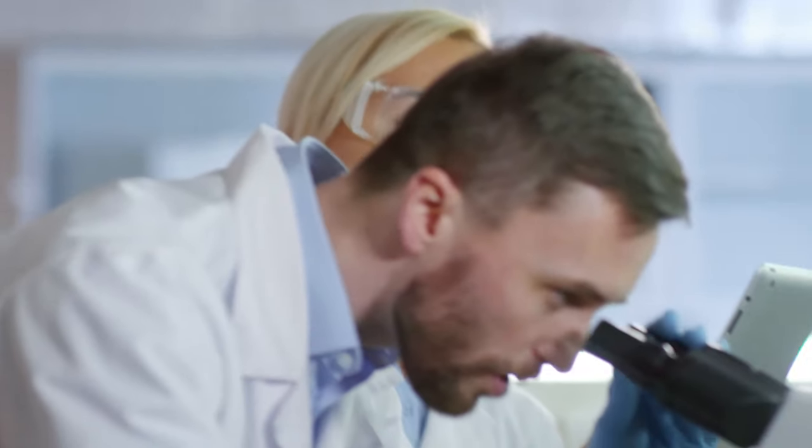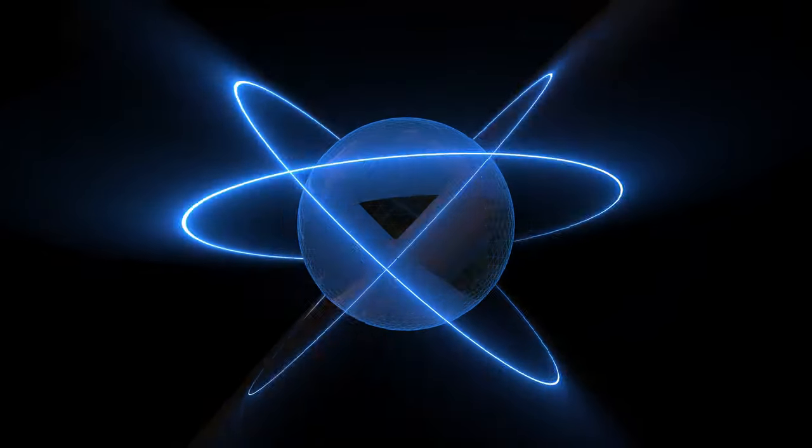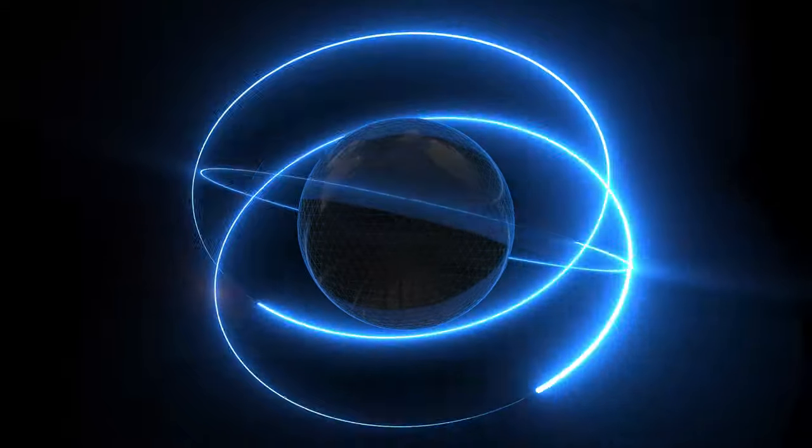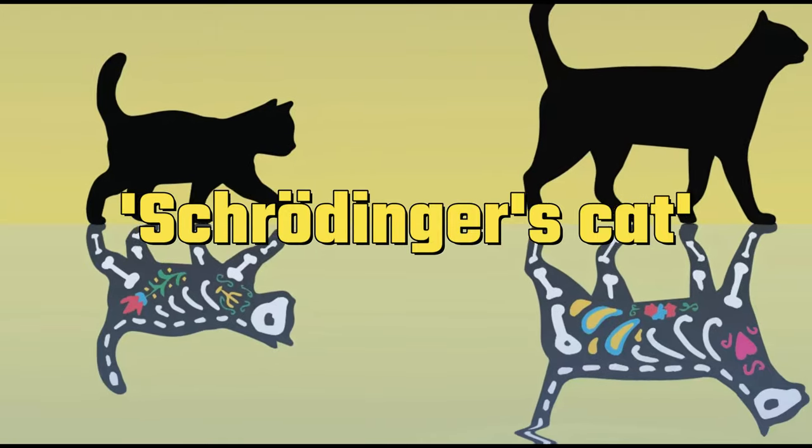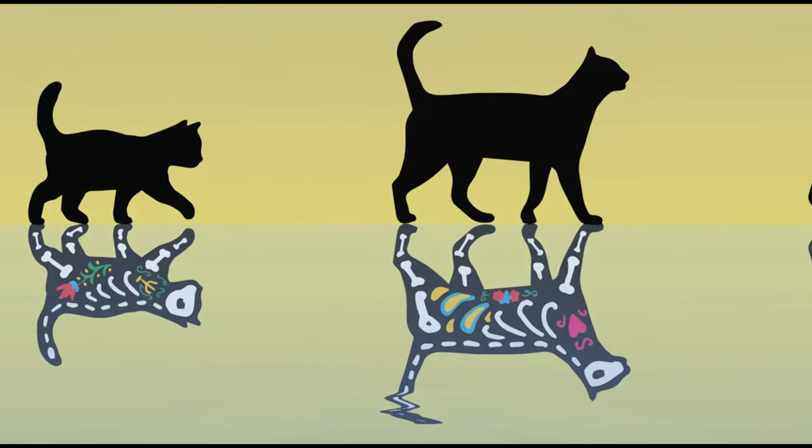Particles, until they are observed or measured, exist in what is known as a superposition of states. Essentially, they exist in all possible states at once. It's only when we observe or measure them that they collapse into a single state. This has led to the famous concept of Schrödinger's cat, which is both alive and dead until observed.